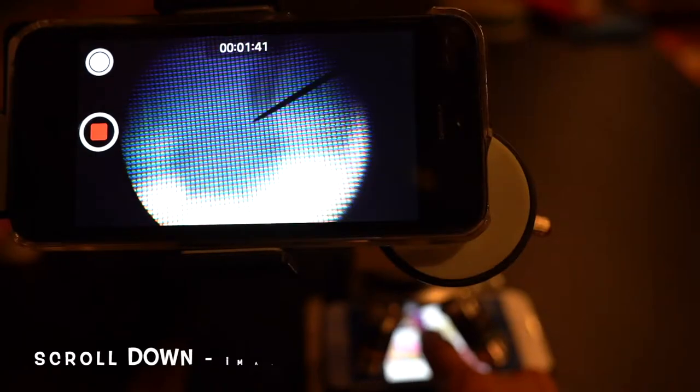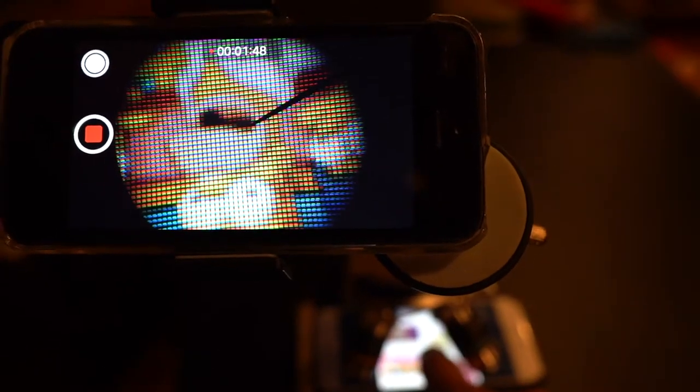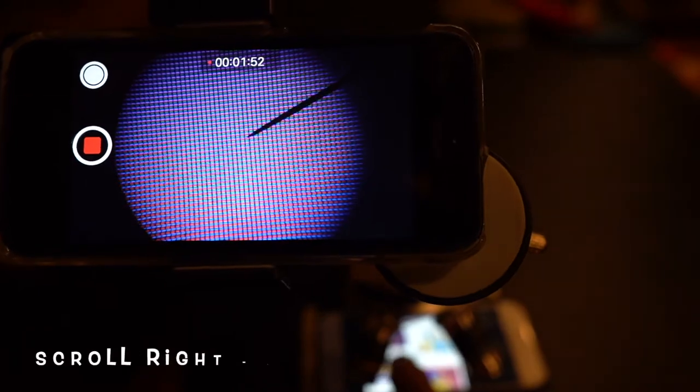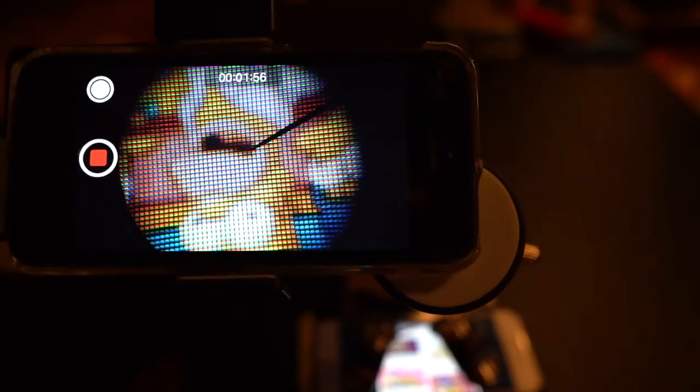So in the next couple slides we'll now look at how stuff moves underneath the microscope. Here I'm scrolling down and you can see the image moves up. Here I scroll up and the image moves down. Here I scroll to the left and the image moves right. And here I scroll to the right and the image moves to the left.